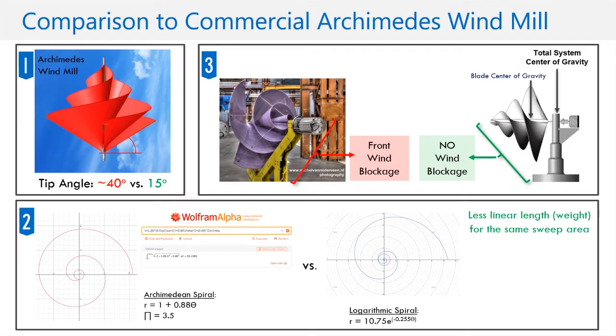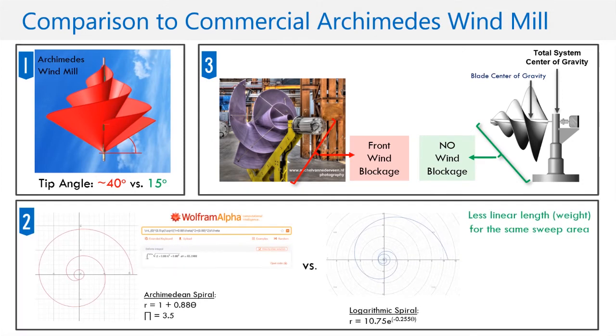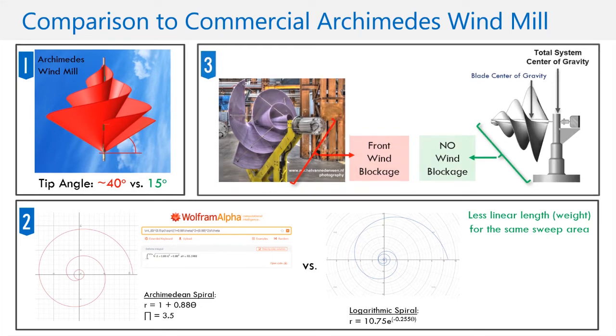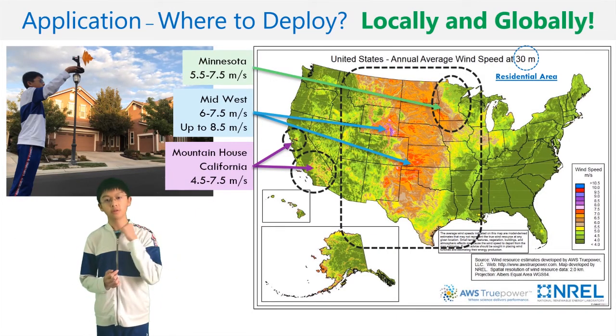How does my logarithmic spiral wind turbine outperform the commercial Archimedes windmill? The low tip angle is proven to be more efficient. The logarithmic spiral has less linear length for the same sweep area, which means less weight, and the frontless stand design reduces wind blockage.